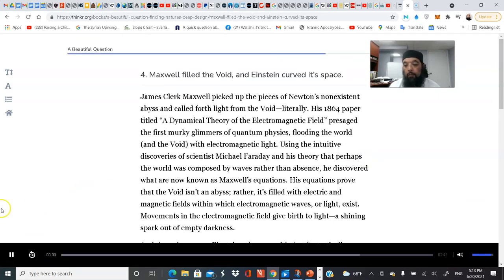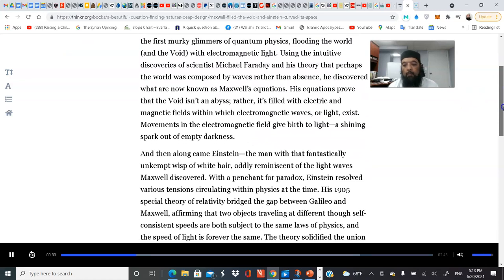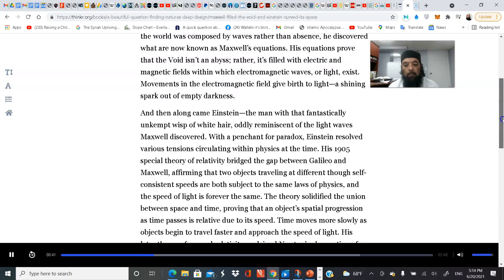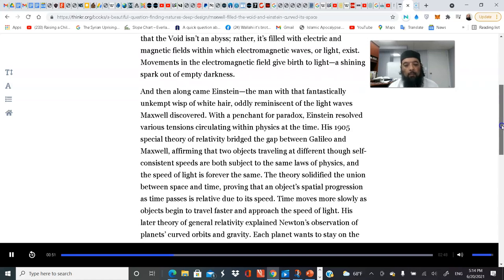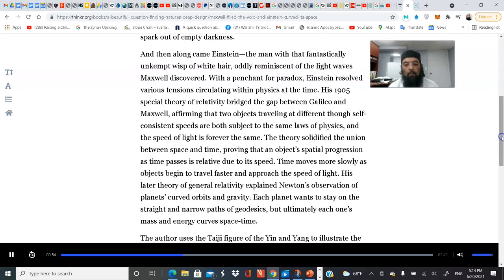Maxwell filled the void and Einstein curved its space. James Clerk Maxwell picked up the pieces of Newton's non-existent abyss and called forth light from the void. Literally. His 1864 paper titled 'A dynamical theory of the electromagnetic field' presaged the first murky glimmers of quantum physics, flooding the world and the void with electromagnetic light. He discovered what are now known as Maxwell's equations. His equations prove that the void isn't an abyss. Rather, it's filled with electric and magnetic fields within which electromagnetic waves, or light, exist.